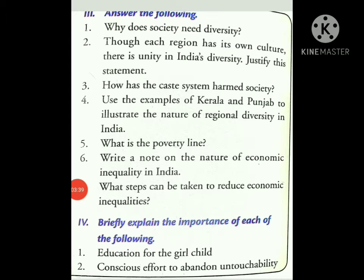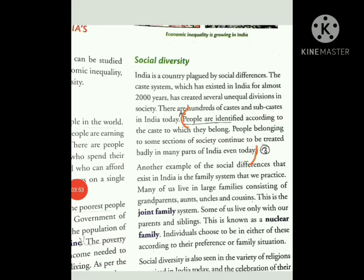The third question is: how has the caste system harmed society? Come to page number 3, paragraph 1 of social diversity. The answer: people are identified according to the caste to which they belong. People belonging to some sections of society continue to be treated badly in many parts of India even today.